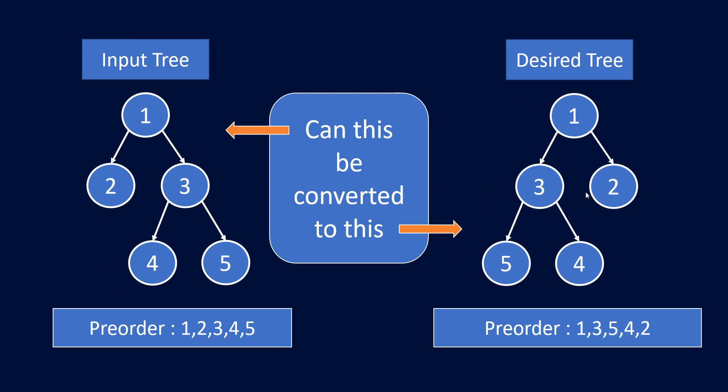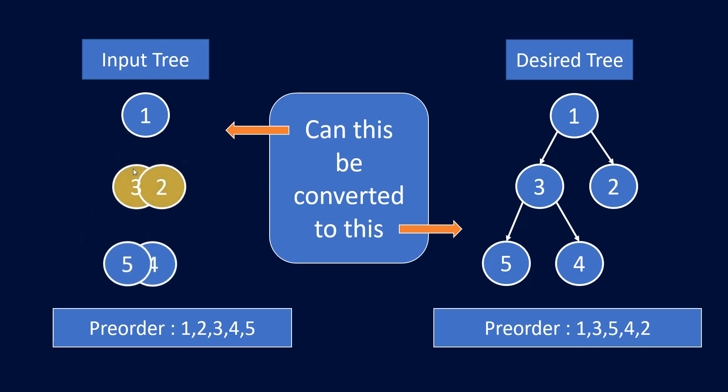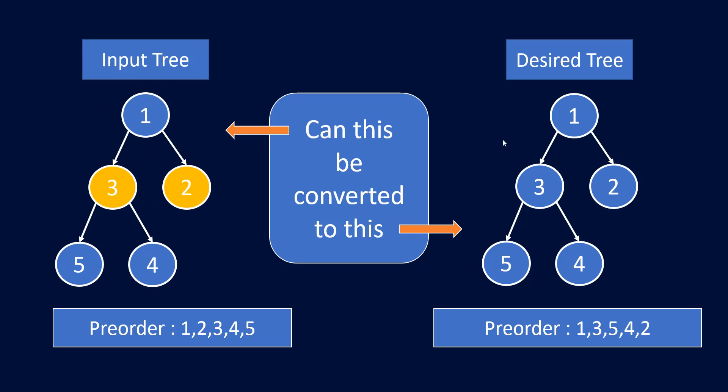But how? By flipping the left and right children of a particular node. In this input tree we can say that if we flip the left and rights for this node 1 we can get the same tree that was desired, and so our result would contain the parent node for which we flipped its child. If there is no way to make the desired tree from input tree by the rules given, then you need to return minus 1 in that list.